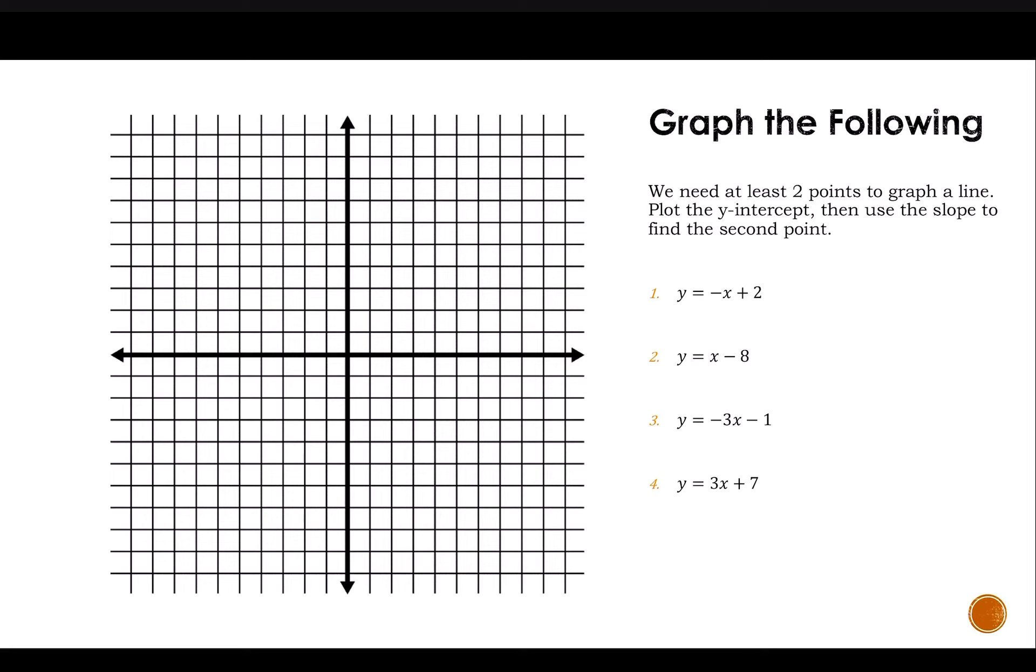So here I have y equals negative x plus 2. We'll graph that in blue. My y-intercept is 2, and my slope is negative 1. I could write that as negative 1 over 1 since it's an integer. That means I'm going to have a change in y, so I'm going to go down because it's negative, down 1 and right 1. We always go to the right.